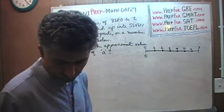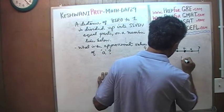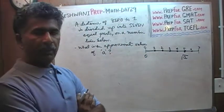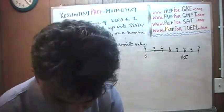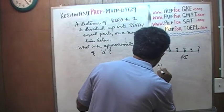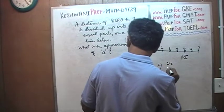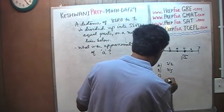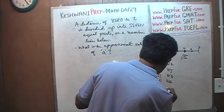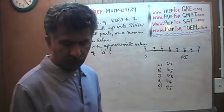We are told that this quantity here equals the square root of a. And here are your answer choices: A) one half, B) three fifths, C) two thirds, D) three quarters, and E) four fifths. What do you suppose this value of a might be approximately?